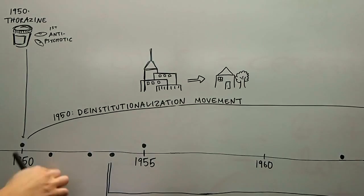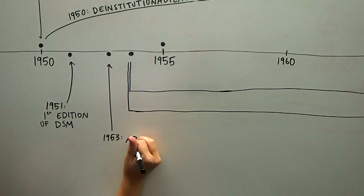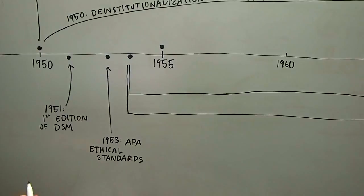In 1951, the first edition of the DSM created a standard criteria for the diagnosis of mental illness. This was followed in 1953 by the American Psychological Association's Ethical Standards Document.